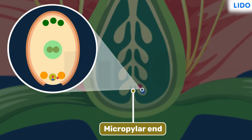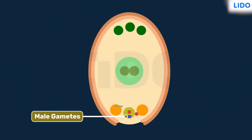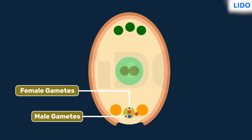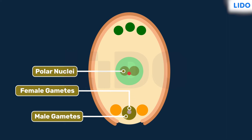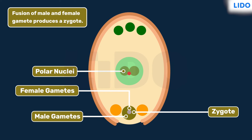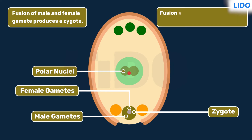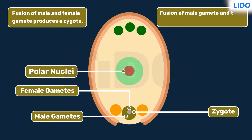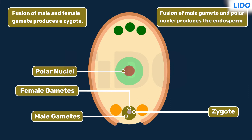One of the male gametes fuses with the female gamete while the other male gamete fuses with the polar nuclei. The fusion of male and female gametes results in the formation of a zygote, whereas the fusion of the second male gamete and the polar nuclei results in the formation of an endosperm.